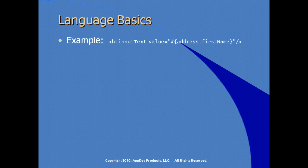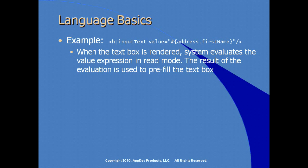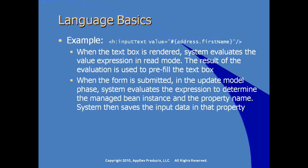For example, on inputText, we're setting the value to something stored in a bean instance called address, property firstName. When the text box is rendered, the system evaluates the expression in read mode to pre-fill the text box. When the form is submitted in the update model phase, the system evaluates the expression to determine the managed bean instance and property name, then saves the input data in that property.